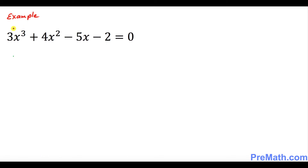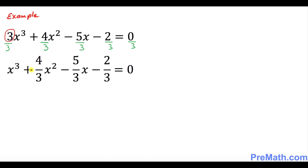The very first thing I want you to focus on is the leading coefficient. The leading coefficient here is 3. We want to make sure this must be 1, so we're going to divide by 3 — divide across the board by 3. Thus our equation now looks like this one with the leading coefficient as 1. The next step is to focus on this very last number, which is the fraction negative 2 over 3.